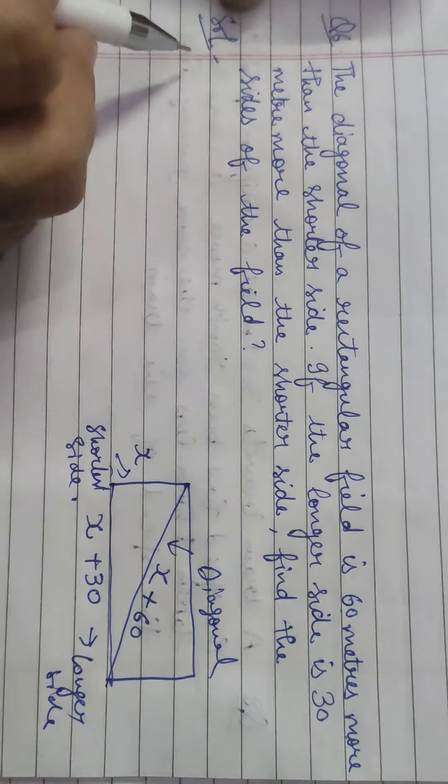The next question: The difference of squares of two numbers is 180. The square of the smaller number is 8 times the larger number. Find the two numbers. Let the larger number = X and the smaller number = Y. Then X² − Y² = 180 (Equation 1).